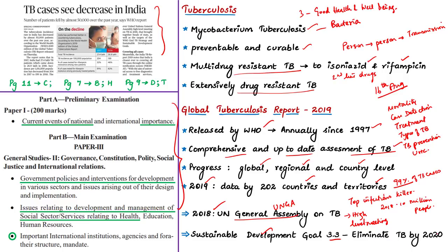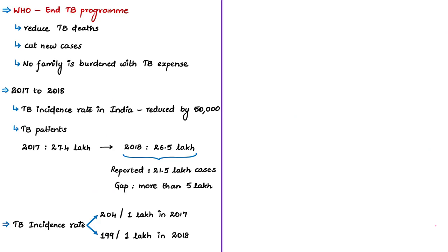The End TB Strategy of the WHO aims to end the global tuberculosis epidemic. Its targets are to reduce TB deaths by 95% and cut new cases by 90% between 2015 and 2035, and to ensure that no family is burdened with huge expenses due to tuberculosis.